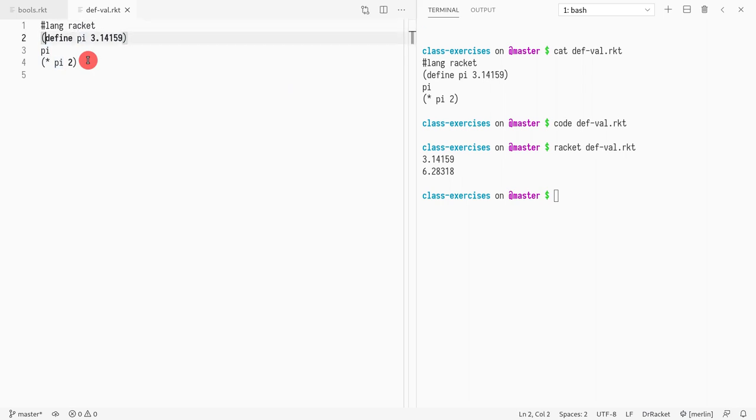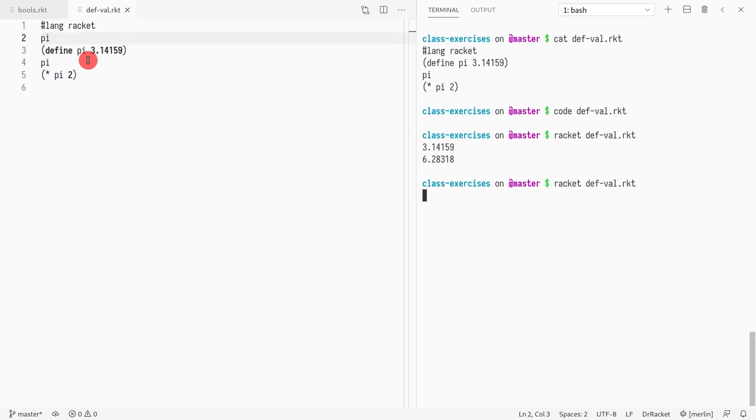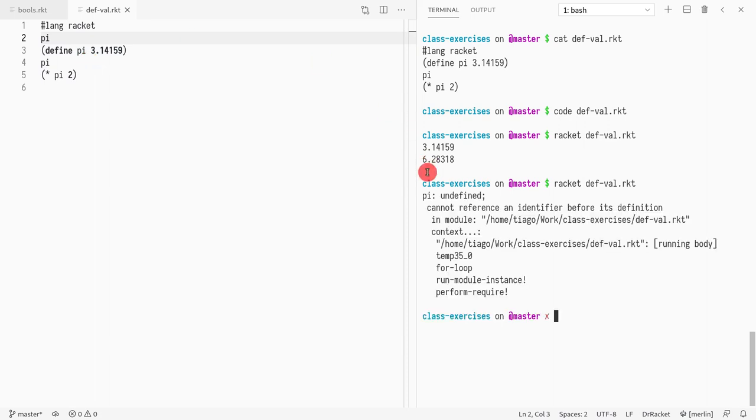But if I were to write pi before, well, here it's not defined, so one would expect an error. Let's see. Yes, it says pi is undefined. So everything works as expected.